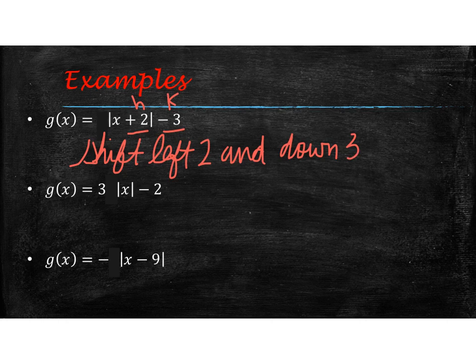In the next example, we have to say what the 3 is going to do and what the minus 2 is going to do. Well, the 3 is in the position of a, and the minus 2 is in the position of k. And so if you look back at a, a makes it stretch or compress. Because it is bigger than 1, then it is going to be a vertical stretch.